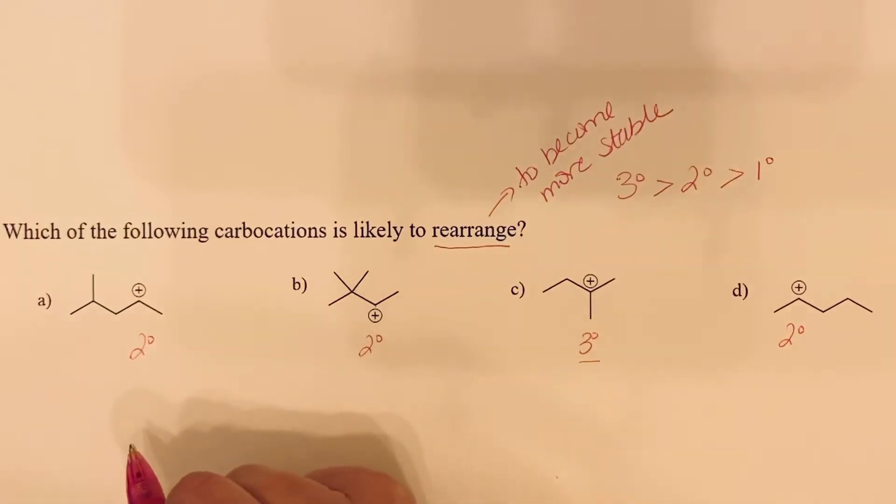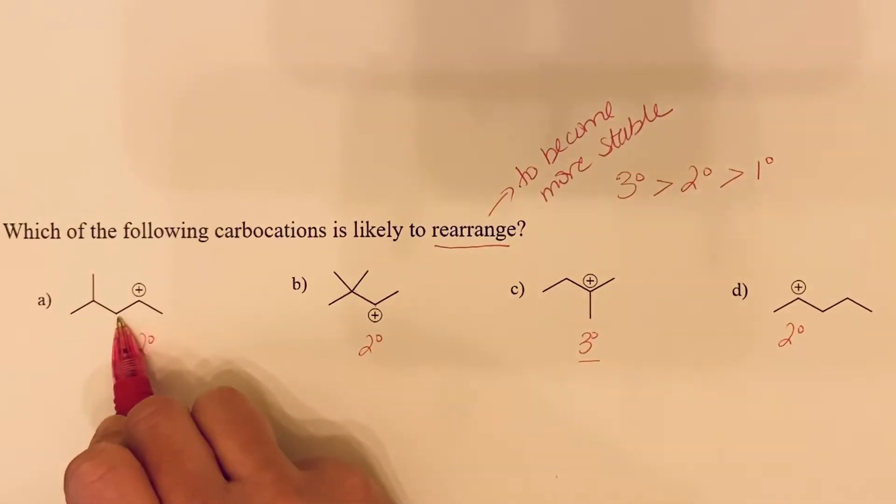What we've seen that can shift are alkyl groups or hydrogens. If we look at the first one, a shift of a hydrogen atom would just give us another secondary carbocation. That's not likely to occur.